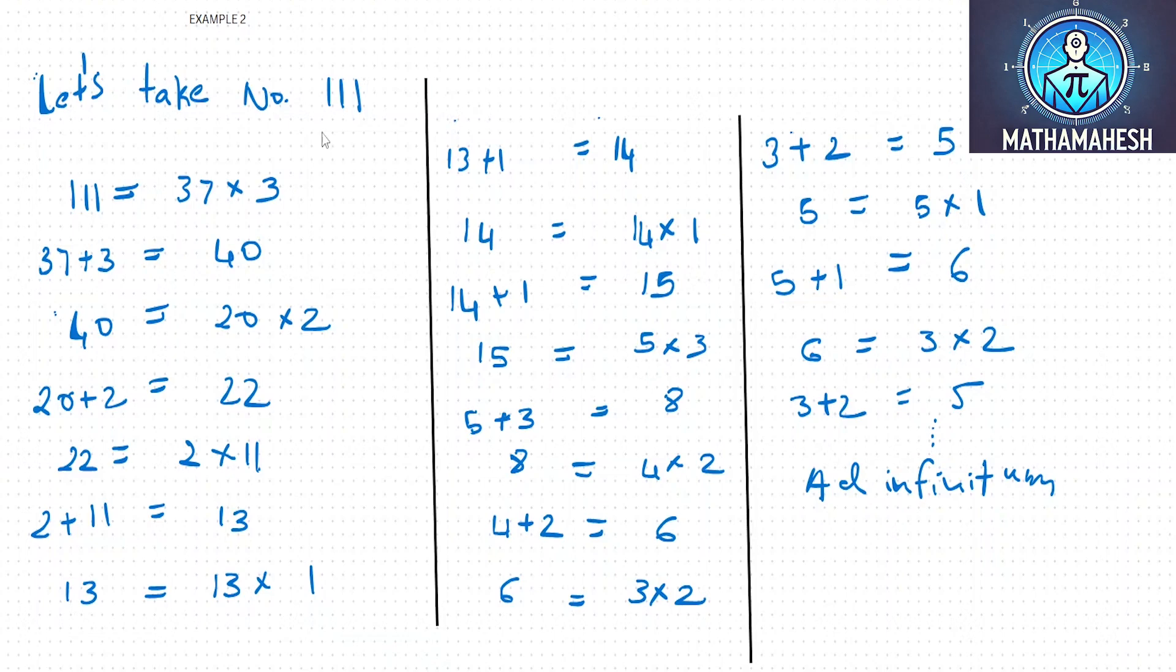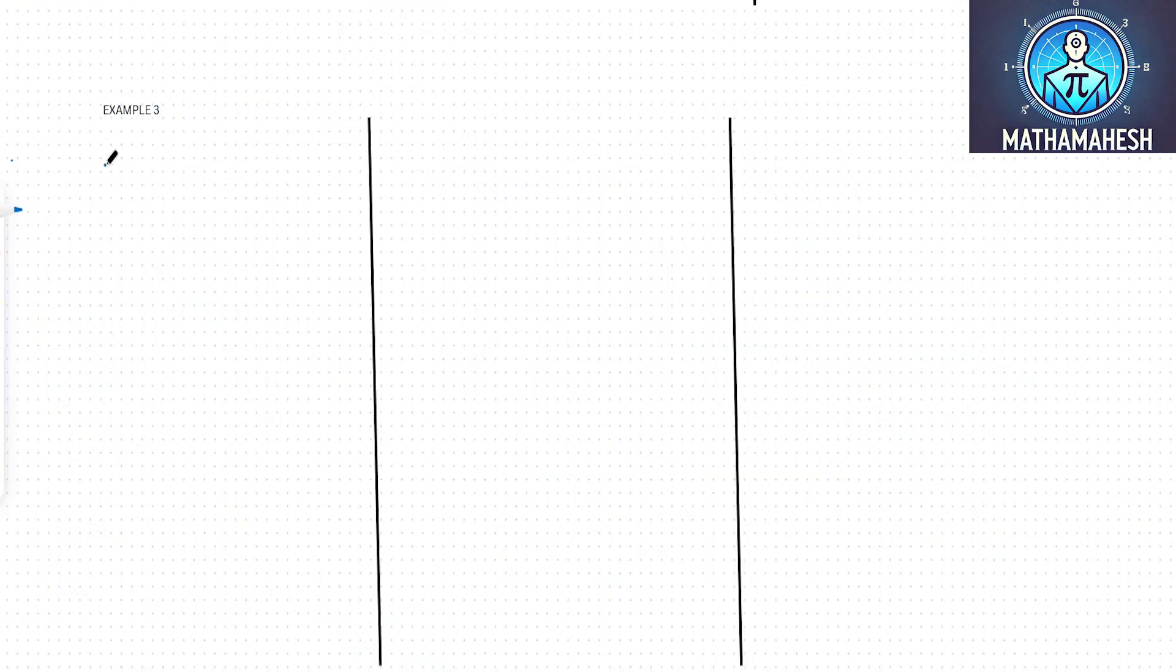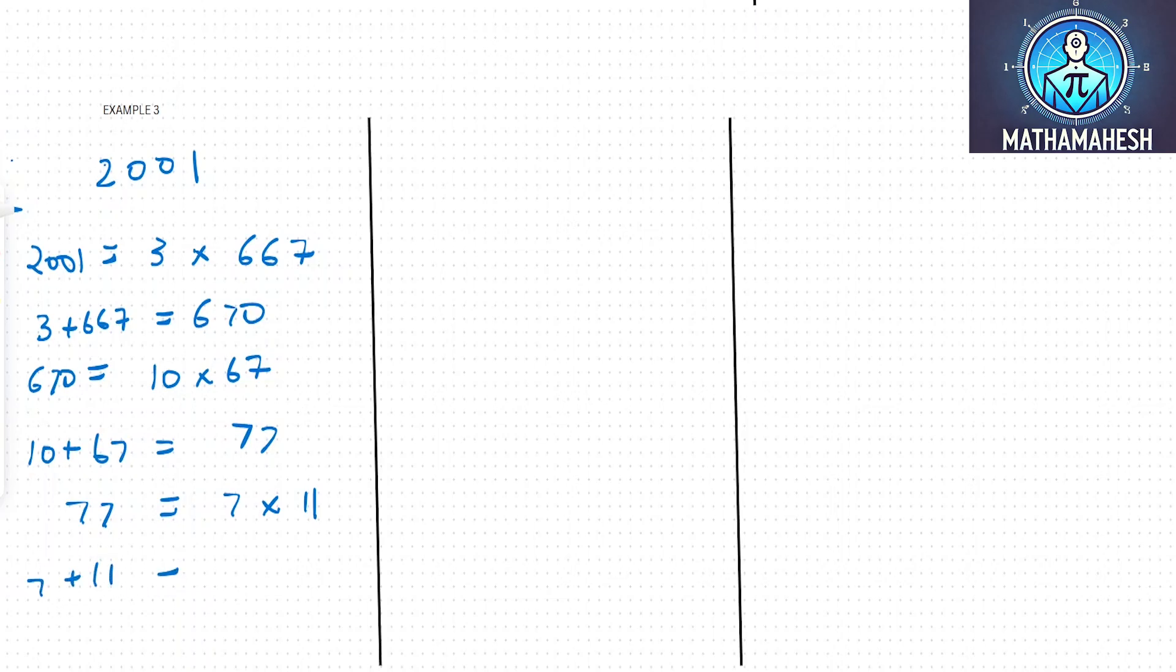Now let's take a 4-digit number, 2001. 2001 can be factored as 3 into 667. Now 3 plus 667 is equal to 670. Now 670 is equal to 10 into 67. 10 plus 67 is equal to 77. 77 is equal to 7 into 11. Now 7 plus 11 gives you 18.